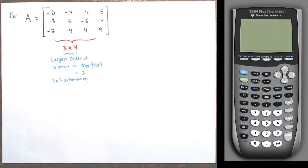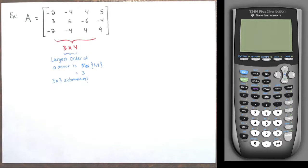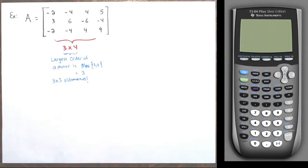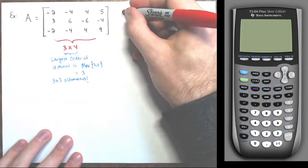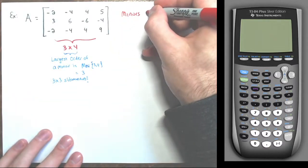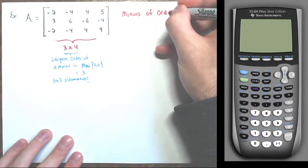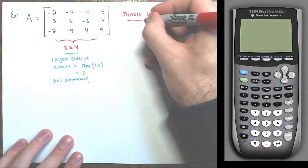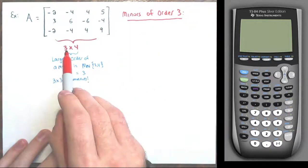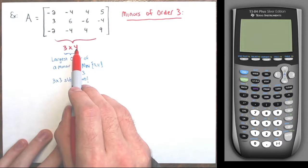As I mentioned from the last video, the rank of this matrix is two, meaning you're going to see all the determinants of the three by threes are going to be zero. So here are the minors of order three. I have a three by four, so to make a three by three I need to remove one column.